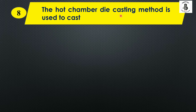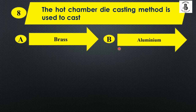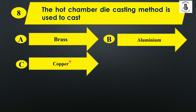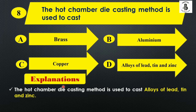The hot chamber die casting method is used to cast: Option A: brass, Option B: aluminium, Option C: copper, and Option D: alloys of lead, tin and zinc. The hot chamber die casting method is most preferred to produce cast material from alloys of lead, tin and zinc. So the right answer is Option D.